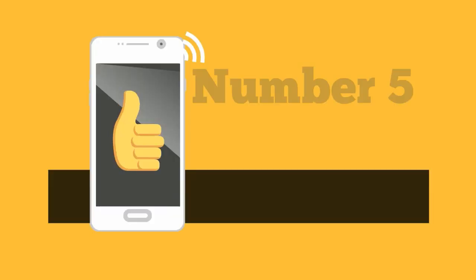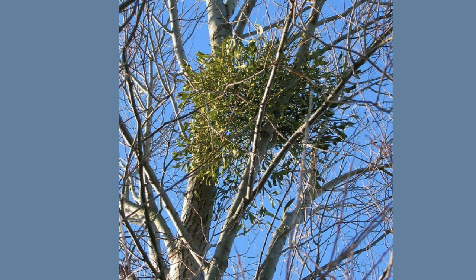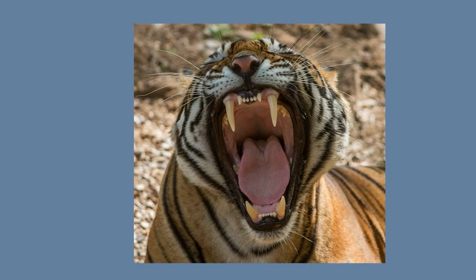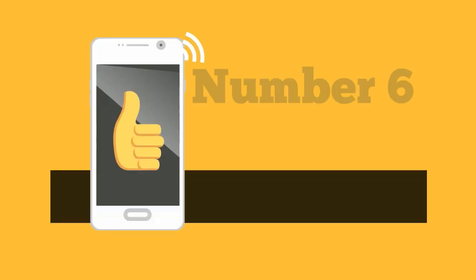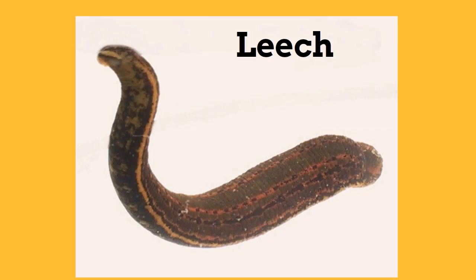Number 5 reason why they are different: Many times a parasite will spend their entire life with their host. Mistletoe, which is a parasitic plant, will spend its entire life in the host tree. A predator-prey relationship is an interaction and not a long-term relationship.